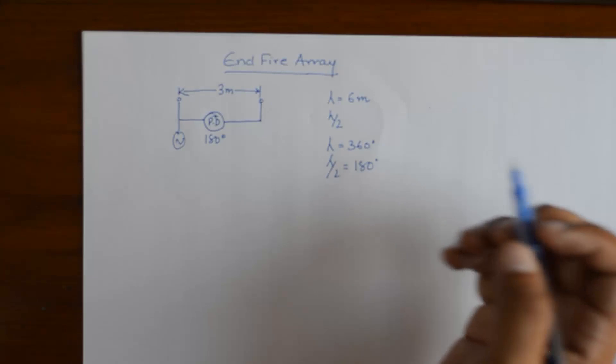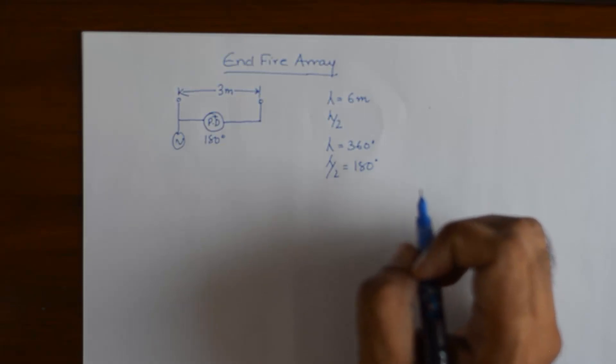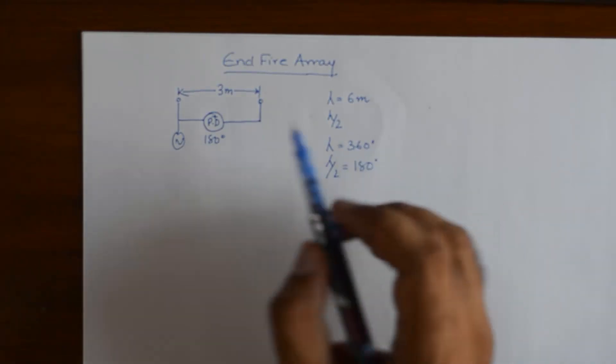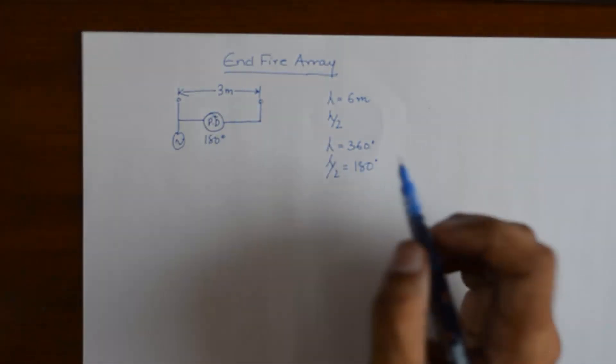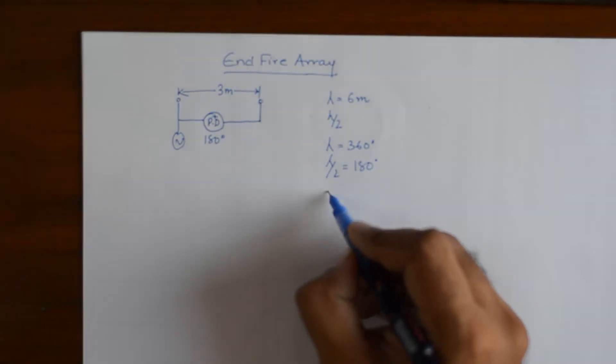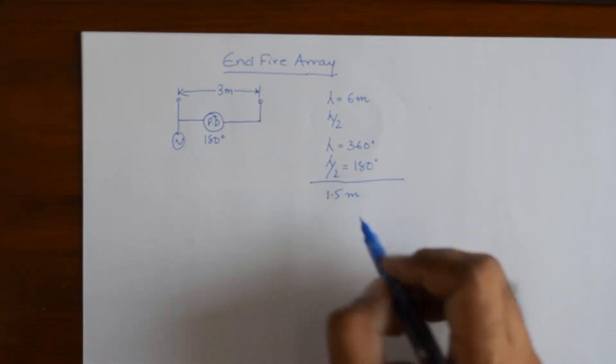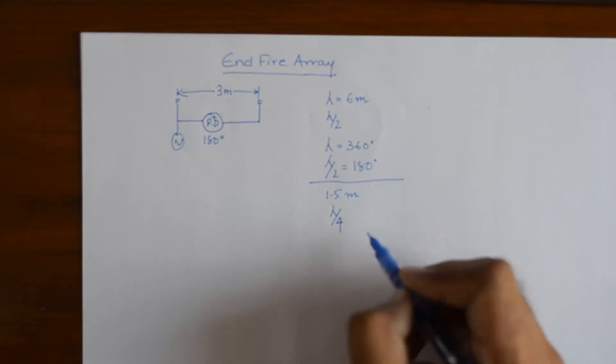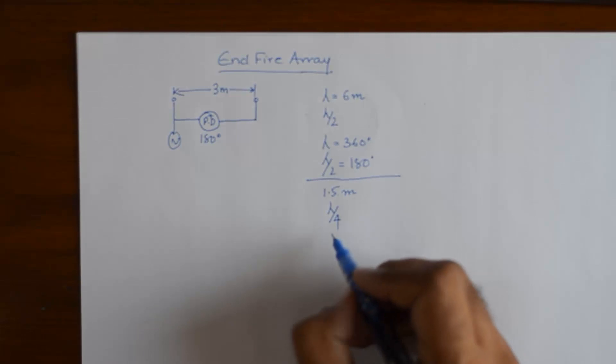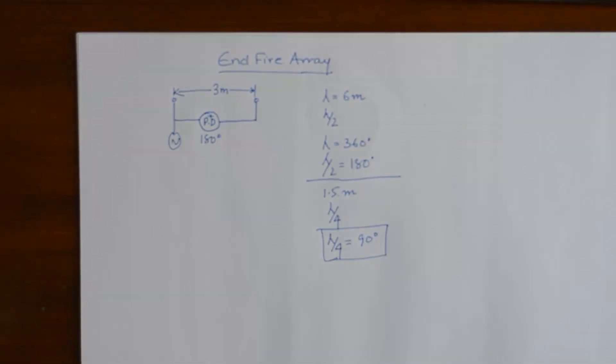Now this progressive phase shift that we give between the elements is directly proportional to the distance between the elements. Had this distance between the elements be 1.5 meters, that would have given me the distance as lambda by 4 in terms of lambda. And I would have given a phase shift of lambda by 4 is equal to 90 degrees between the progressive elements.